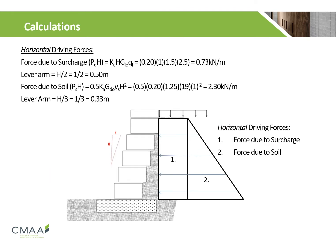Firstly, we need to determine the horizontal driving forces from the force due to the surcharge and the force due to the soil. This gives us a value of 0.73 kN per meter due to the surcharge and 2.3 kN per meter due to the soil. We also need to account for overturning failure by determining the lever arm for each of our forces.